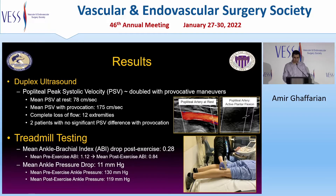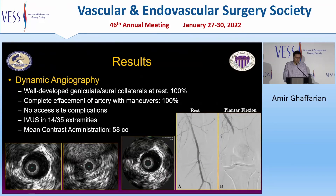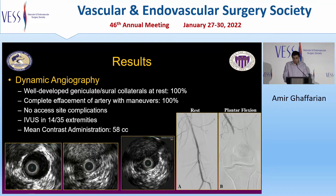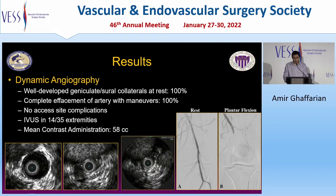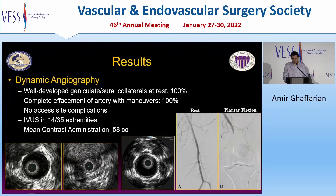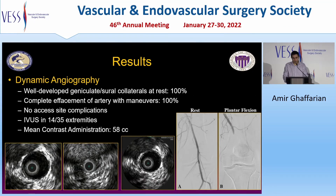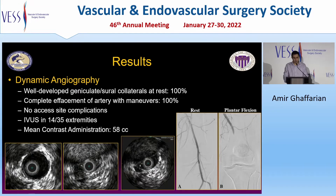On treadmill testing, the average ABI drop was 0.28 with exercise, and the mean ankle pressure drop was 11 millimeters of mercury. During dynamic angiography, there were well-developed genicula and sural collaterals at rest in 100% of patients, and all patients had complete effacement of the artery with provocative maneuvers. We had no access site complications, and we used IVUS in 14 out of the 35 extremities, with average contrast administration of 58 cc's.